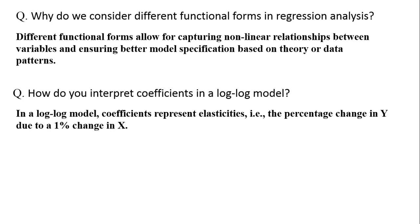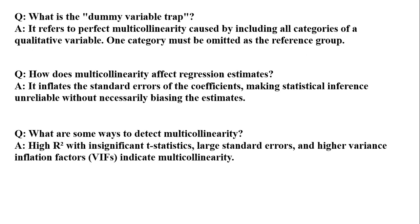What is the dummy variable trap? It refers to perfect multicollinearity caused by including all categories of a qualitative variable. To avoid this, one category must be omitted as the reference group.